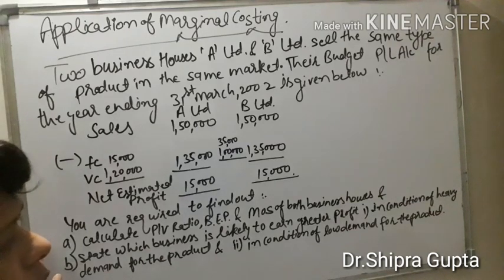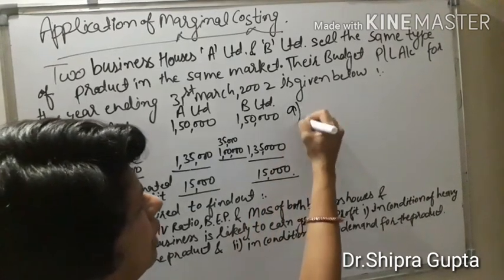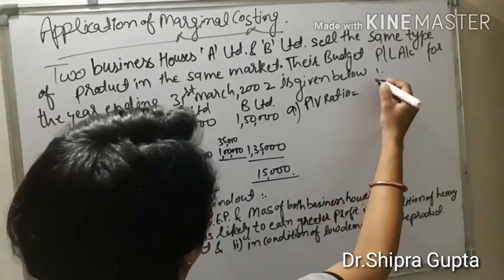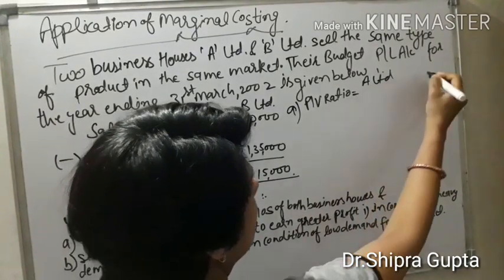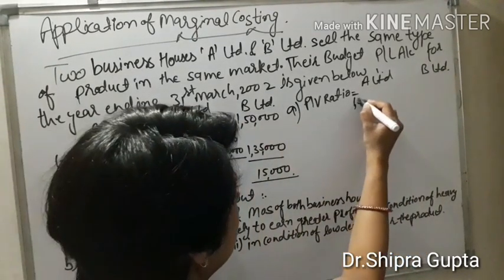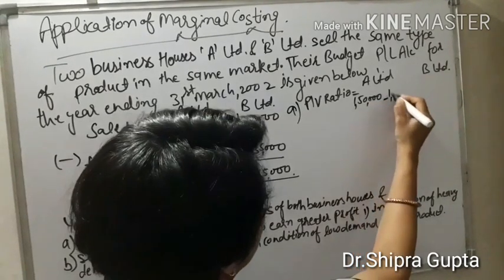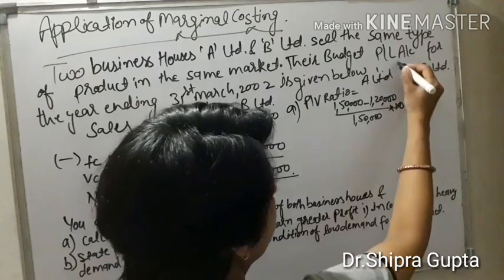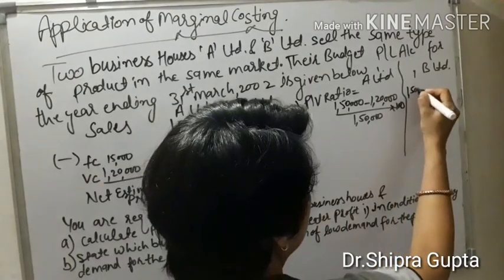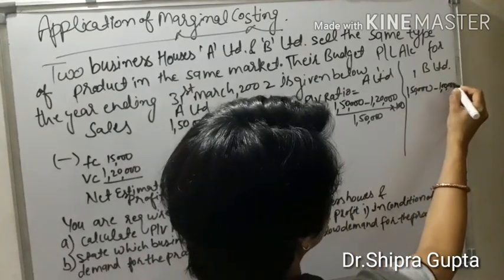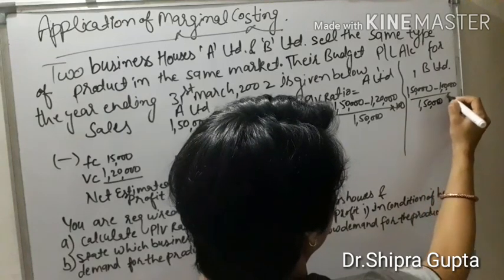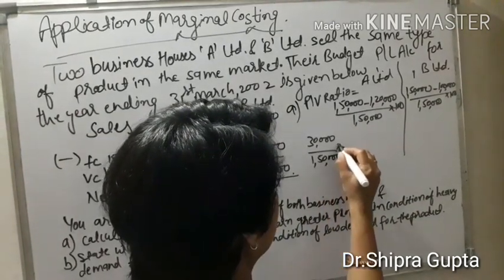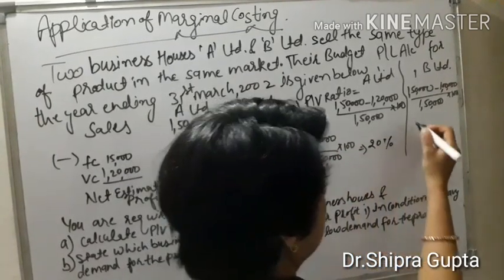First we will calculate the profit volume ratio. The PV ratio formula is (S minus V) divided by S, multiplied by 100. For A Limited: S = 1,50,000 minus V = 1,20,000, divided by S = 1,50,000, multiplied by 100. That gives 30,000 divided by 1,50,000 multiplied by 100, and the answer is 20 percent.